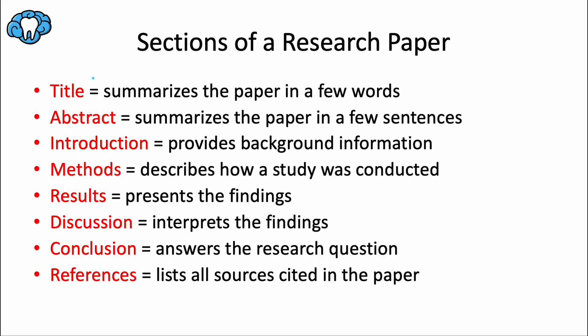For the herbal mouthwash research question, the title might be: 'Effectiveness of Herbal Mouthwash in Reducing Gingivitis: A Randomized Controlled Trial.' The abstract is a brief summary of the research paper, usually between 150 and 250 words. It includes the background, objectives, methods, results, and conclusions of the study, allowing readers to quickly understand the study's purpose and key findings. Think of it this way: the title summarizes the paper in a few words, while the abstract summarizes it in a few sentences.